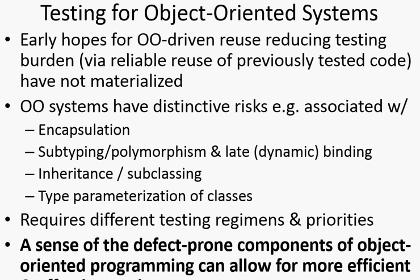And then we have type parameterization, which really gets to the issue of generics — as Kyle had mentioned. We can make a given class have a parameterized type: a list of Person, a hash table from String to Person, an ArrayList of Integer, or what have you.